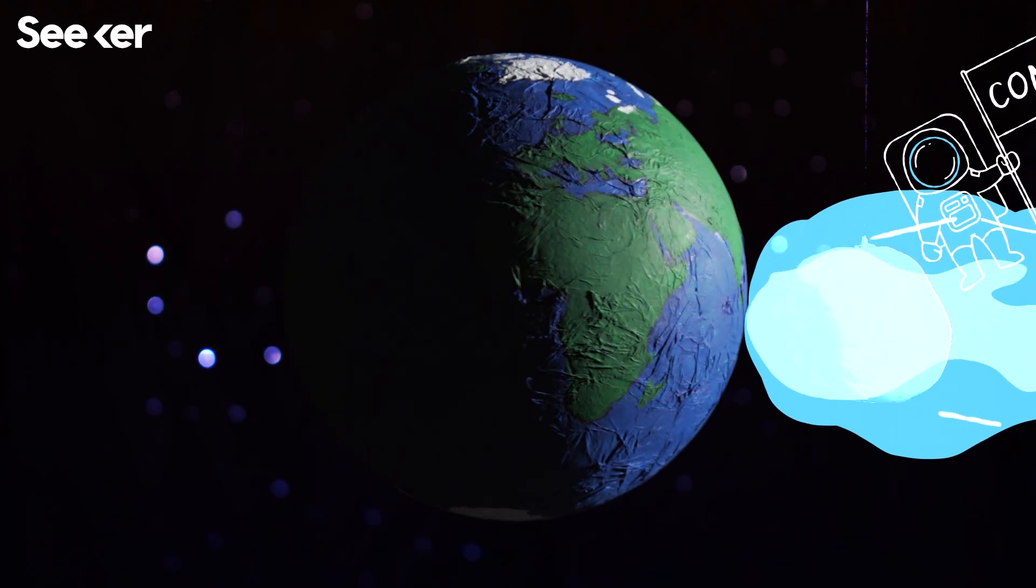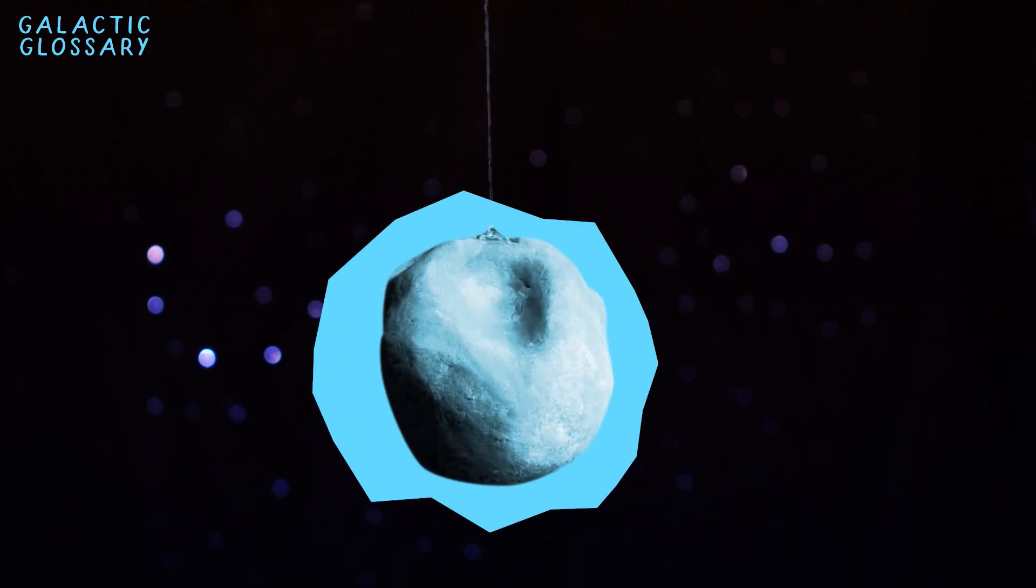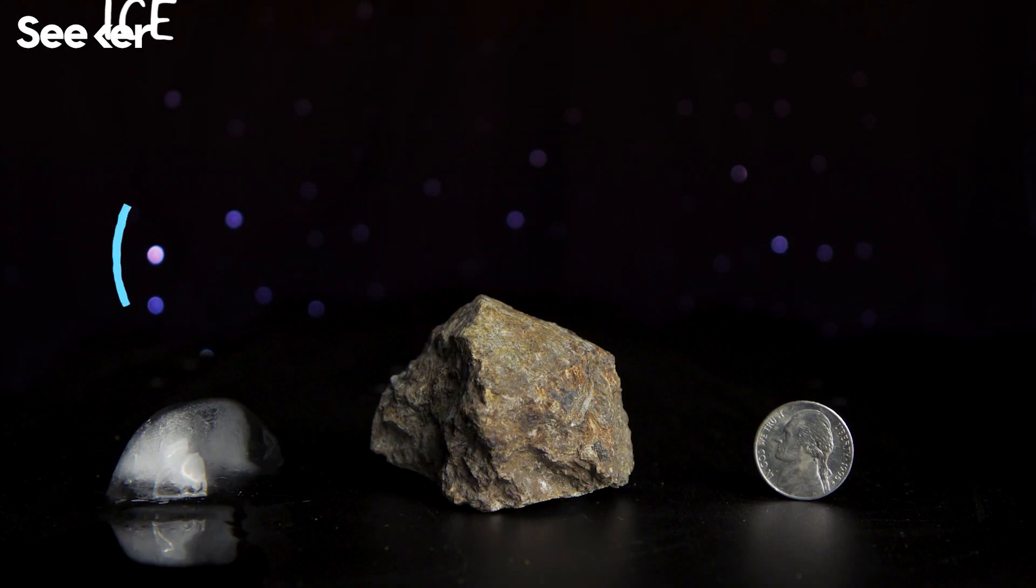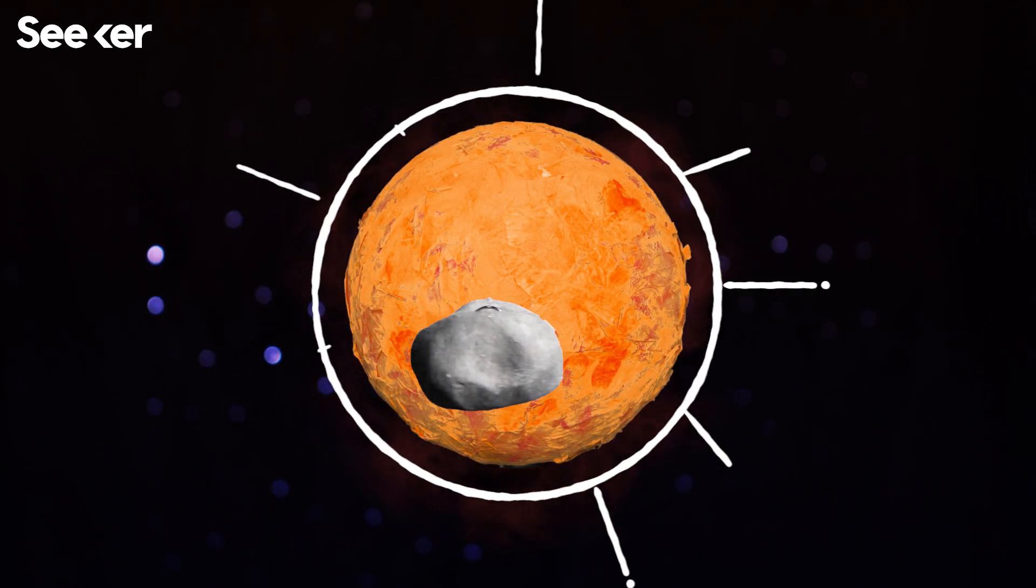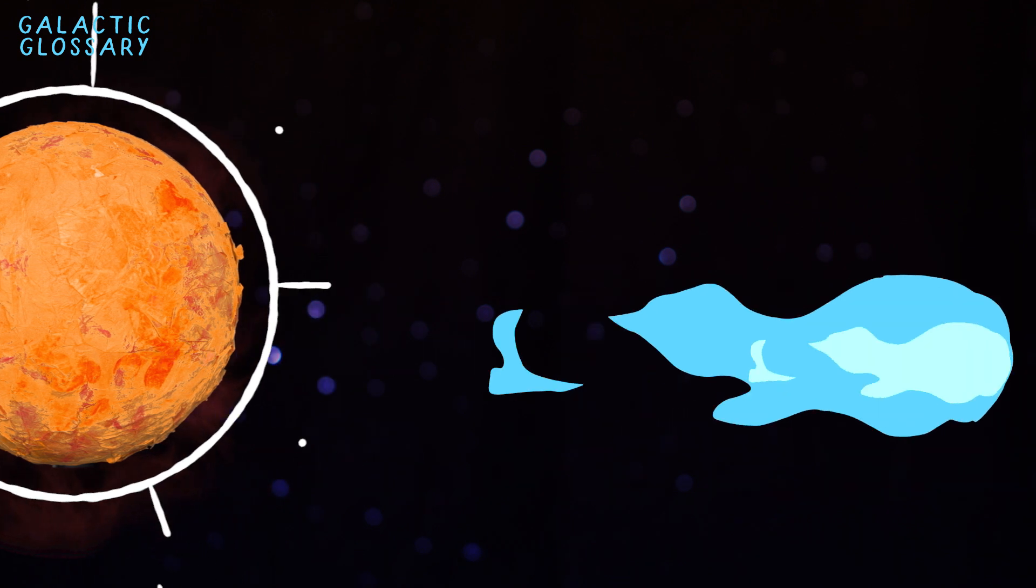Comets pass near Earth, but they never make it to the surface. These cosmic snowballs form over time in the outer reaches of the solar system and are made up of ice, rock, and metal. If a comet gets too close to the sun, some of the ice heats up and turns into a gas, creating a glowy layer and that famous tail.